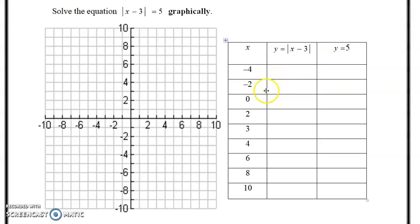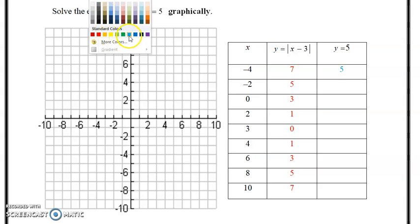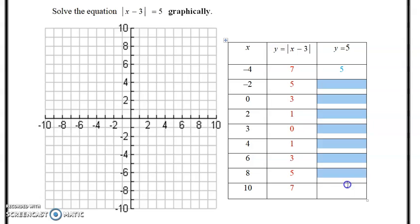So again, you could use a table of values to graph that. Just plugging these values in here. And when you do so, negative 4 subtract 3 is negative 7. That's the value of 7. And then you continue down. You get 5, negative 3, and 1, 0, 1, 3, 5, and 7. I'm going to do the same thing here. And obviously it's 5, so it's just going to be all 5s here, 5s all the way down the board.